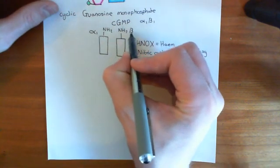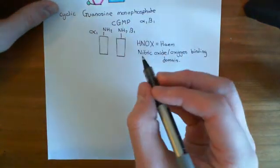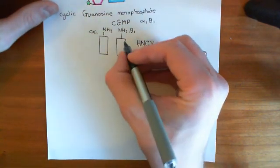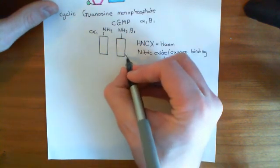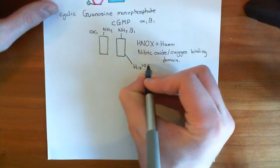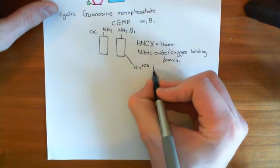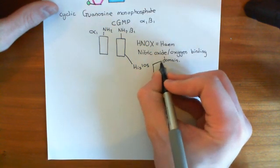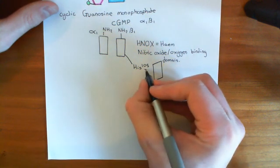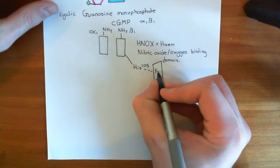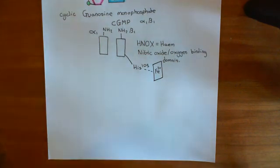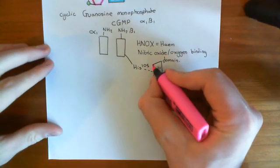In that form, the beta-1 subunit has a histidine at position 105, which forms a coordinate bond with the prosthetic heme group attached to this enzyme. You get a coordinate bond with the ferrous cation at the centre of the heme group, and that's how we adjoin the prosthetic heme group to our soluble guanylate cyclase enzyme.